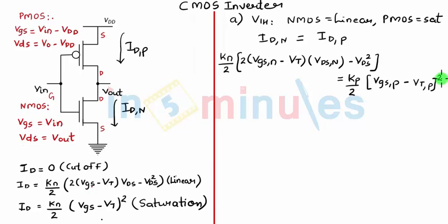Now let's substitute the corresponding values of VGS and VDS into the equation. For NMOS, VGS is VIN minus VT, VDS for NMOS is Vout minus Vout squared, equal to KP by 2, VGS for a PMOS is VIN minus VDD minus VTP the whole squared.